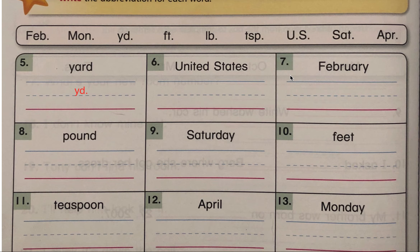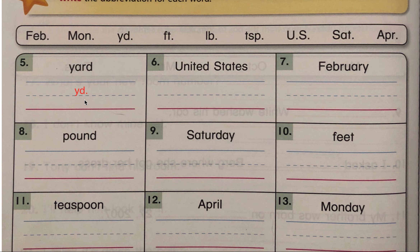Number seven: what is the abbreviation for February? When you find it, write it here on the lines. Number eight: what is the abbreviation for pound? If you don't know this one, you will have to check in the PowerPoint presentation. Pound is a unit of measurement, like yard, like foot, like teaspoon. So if you don't know, you can check the PowerPoint presentation.